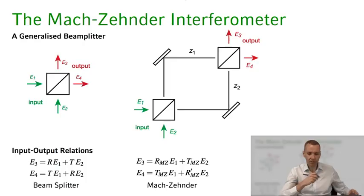Welcome back everybody to our lecture Introduction to Quantum Optics. Today we want to return to the Mach-Zehnder interferometer and discuss how we can use the general relations of the quantum beam splitter we introduced in the last class, to look at the quantum version of the Mach-Zehnder interferometer. But first let's take a step back and look at the classical version of the Mach-Zehnder interferometer again.